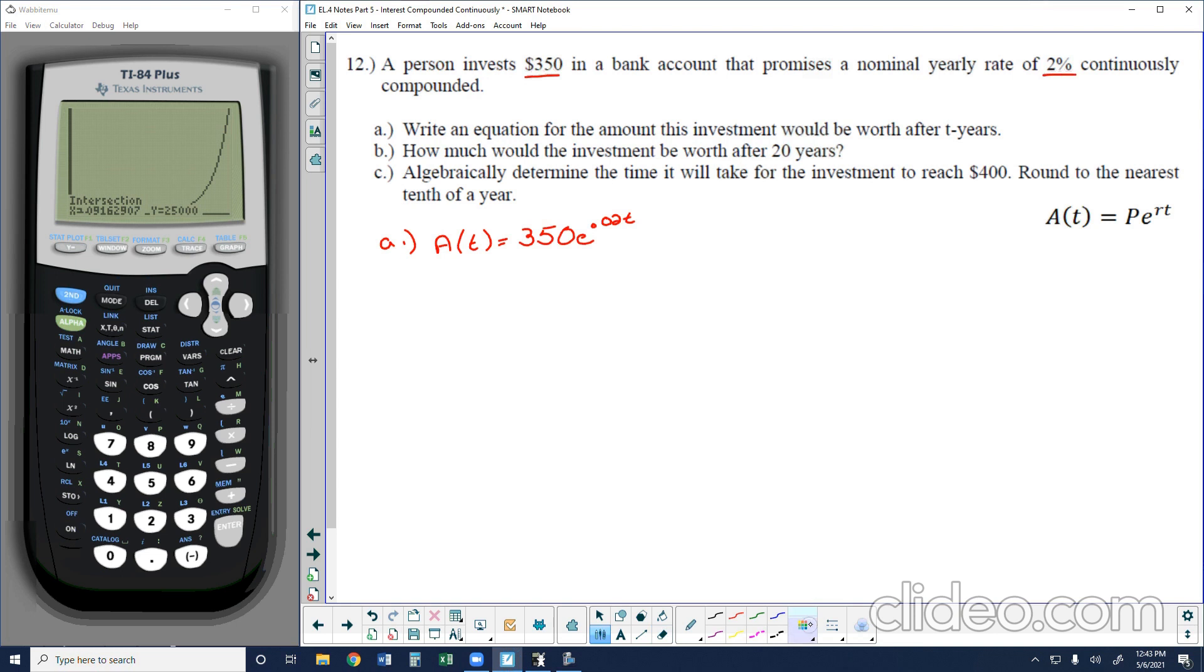In part B, it asks us how much the investment would be worth after 20 years? Well, we can simply find A of 20 in this case. So we would do 350 times E to the 0.02 times 20 power, which would be approximately $522.14. And so this would be the account value after 20 years.